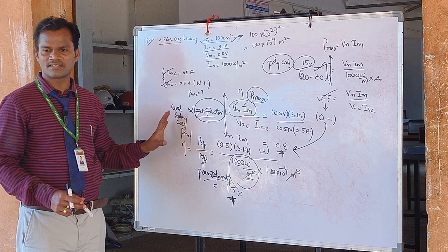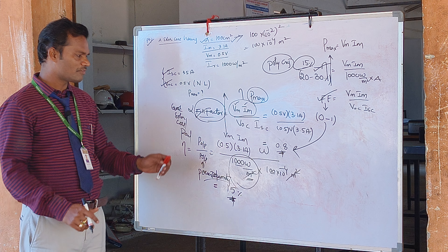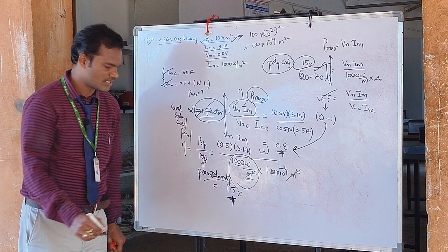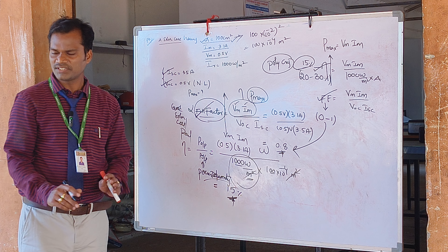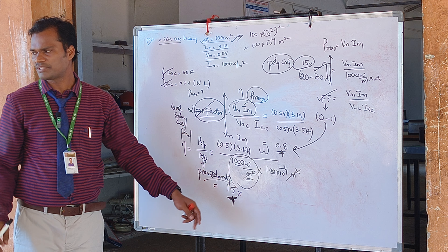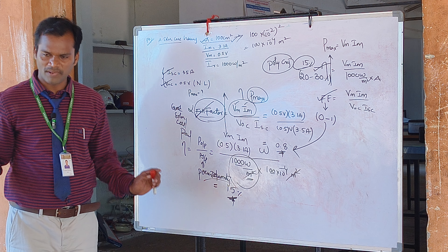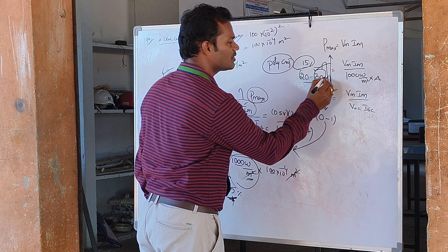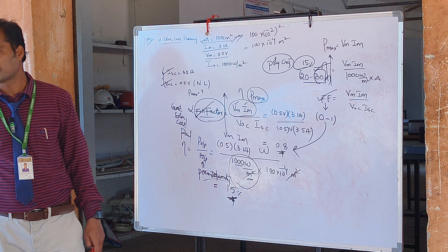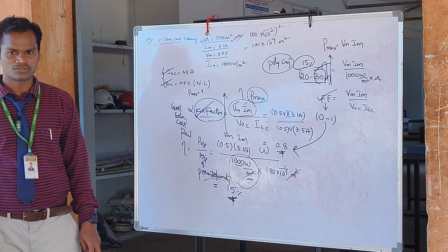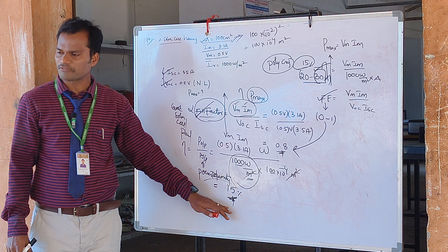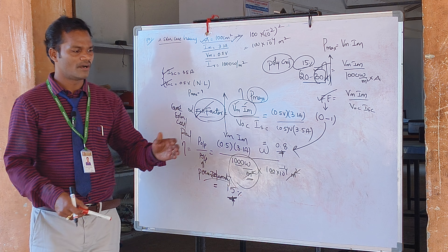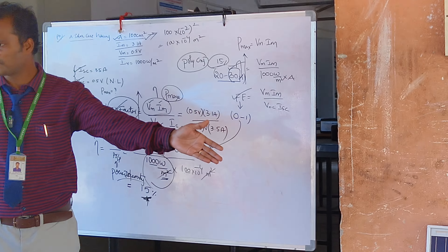In summary, the performance indices of this panel are: fill factor of approximately 80% and efficiency of 15%. Don't think negatively that 15% means 85% is lost — even a high-quality mono-crystalline panel achieves only 30% efficiency, with 70% loss, because it is a DC system. With the available technology, this panel is performing well with the given parameters.